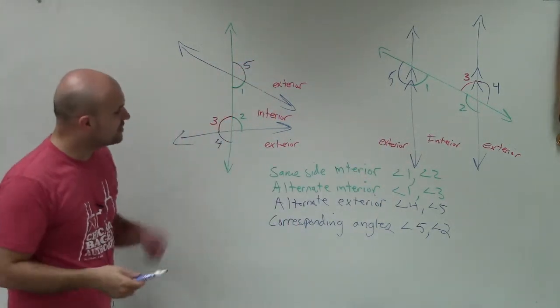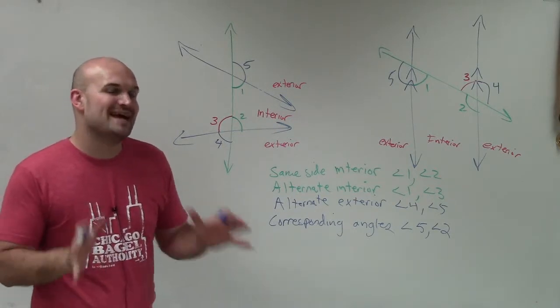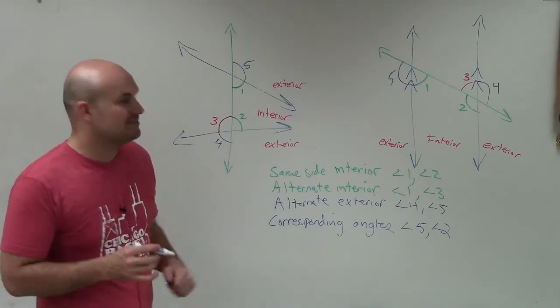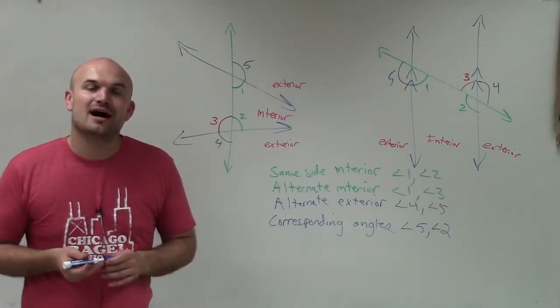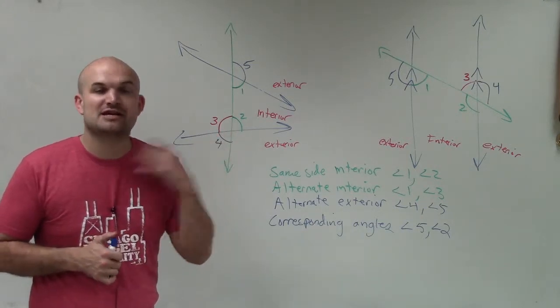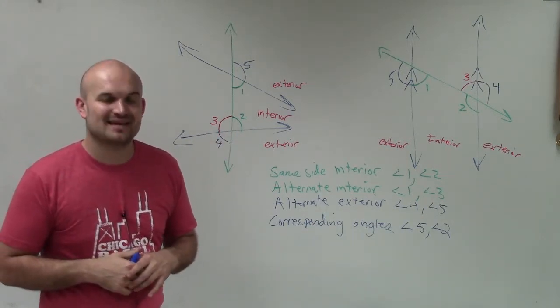So there you go, ladies and gentlemen. These are your four main angle relationships that we're going to be dealing with when a transversal intersects two lines. Thanks.